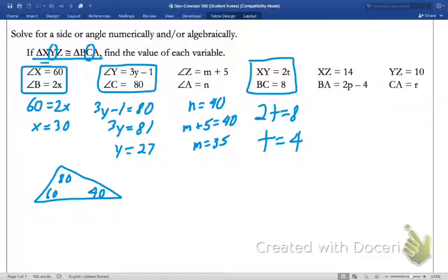XZ, which is 1st and 3rd in our relationship, should match up with BA, and it does. So, we're going to set 14 equal to 2P minus 4. So, add 4 to both sides and divide by 2. Half of 18 is 9.